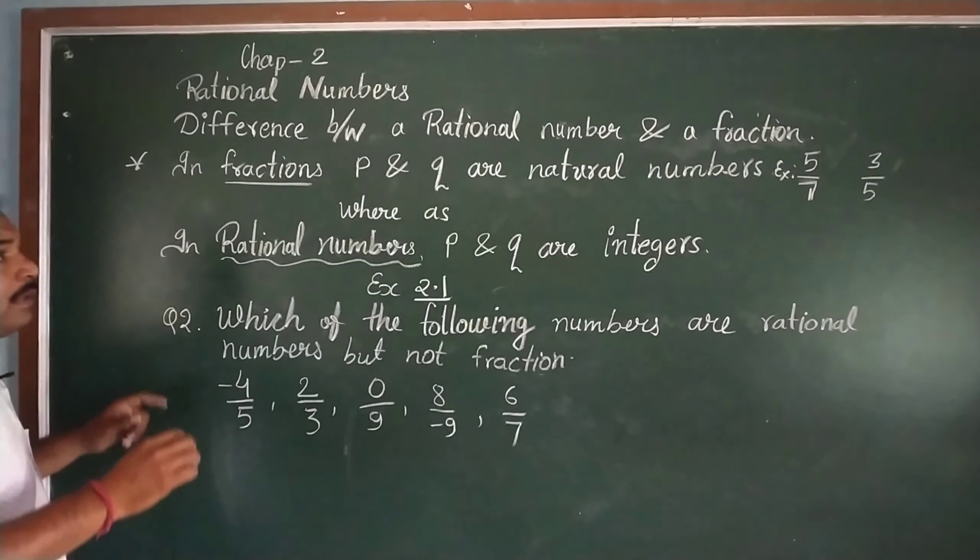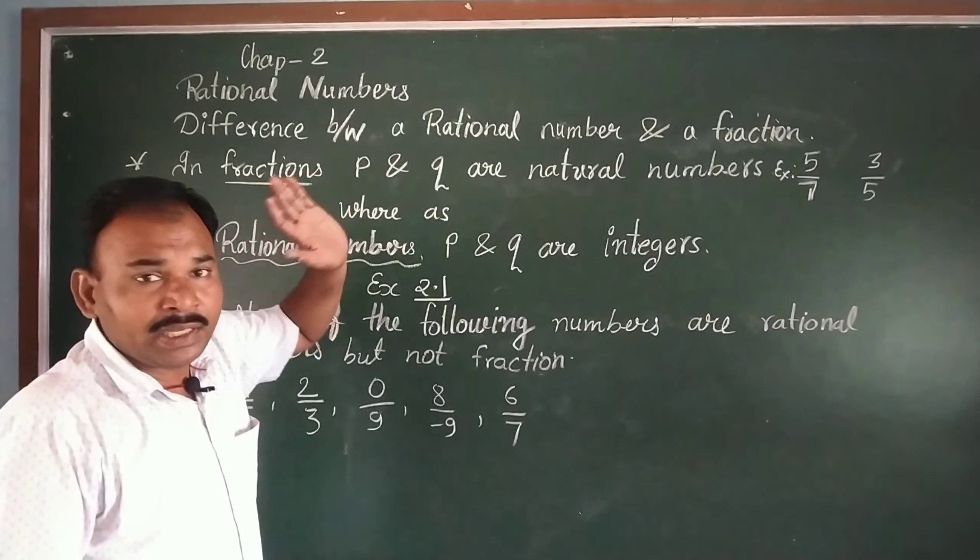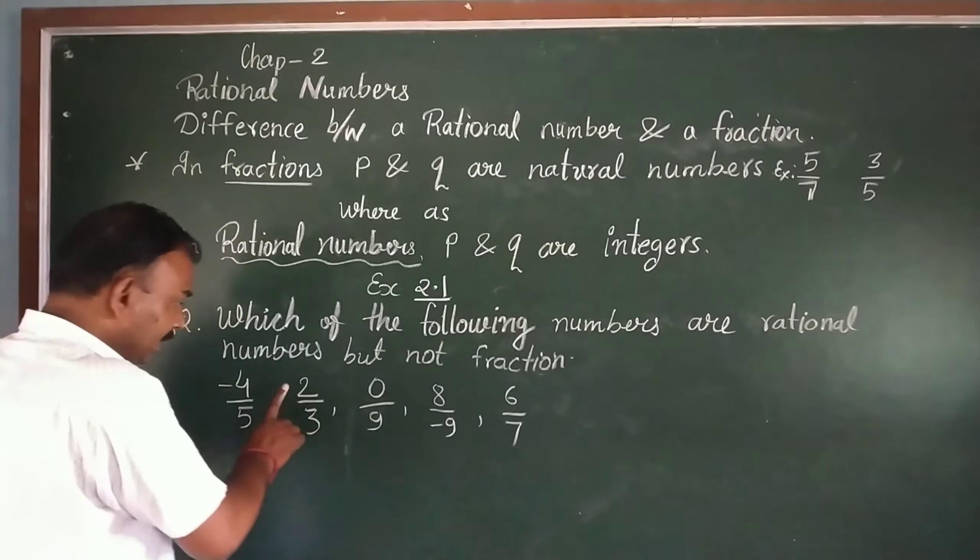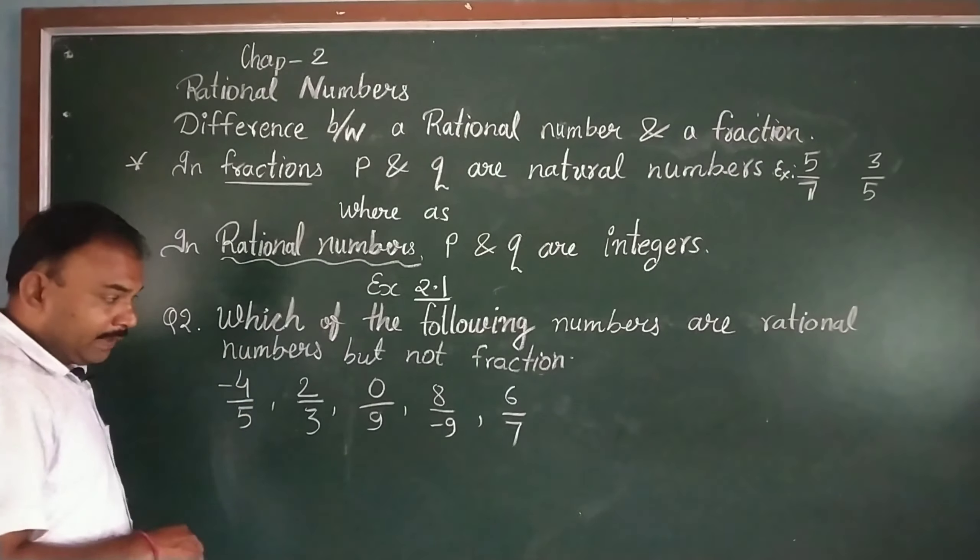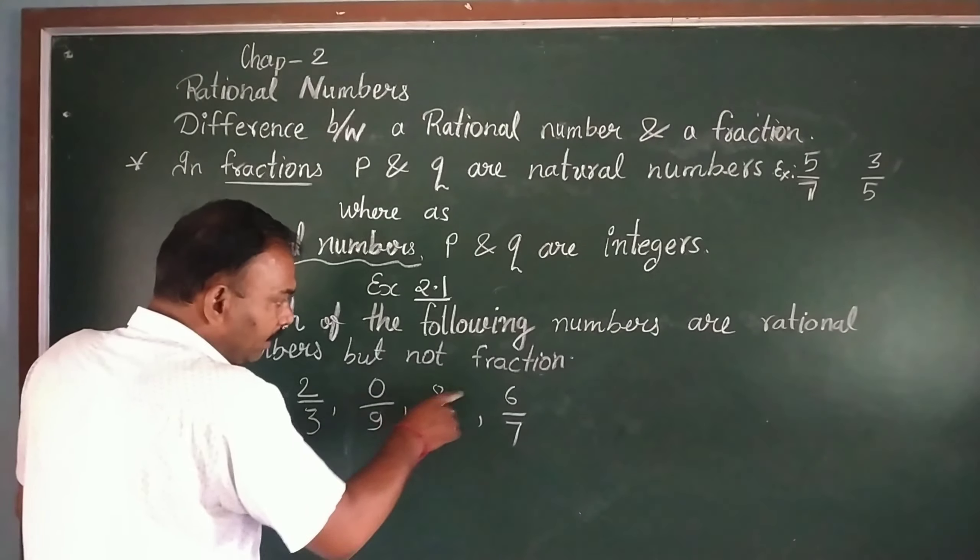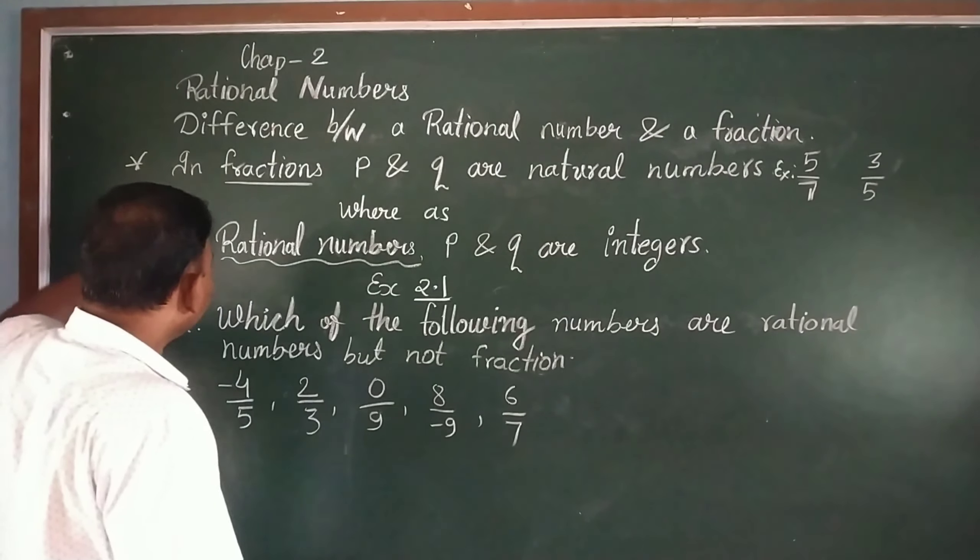You can see fractions here. How should the value be? Positive should be here. Here you have 2 upon 3, this is also a fraction. Or 6 upon 7, this is also a fraction.